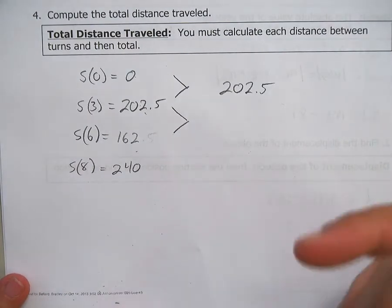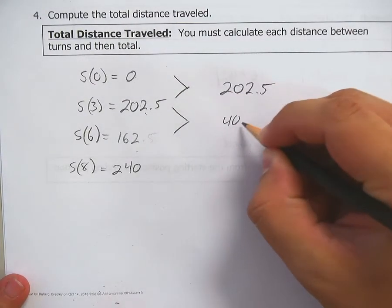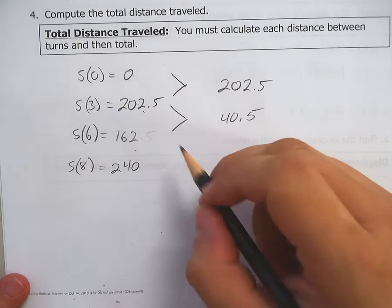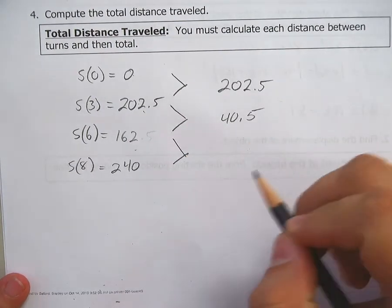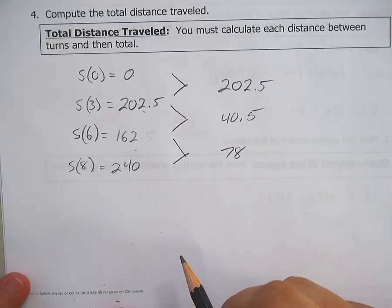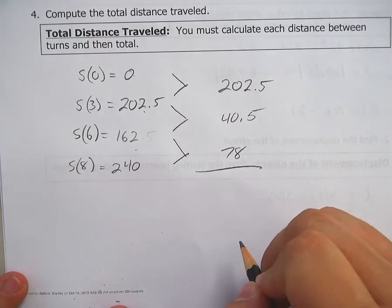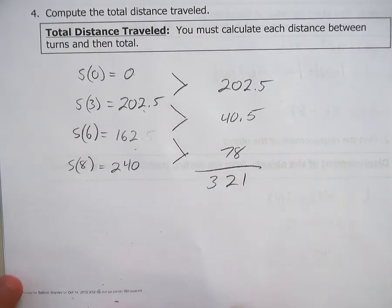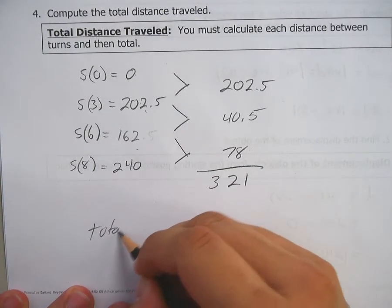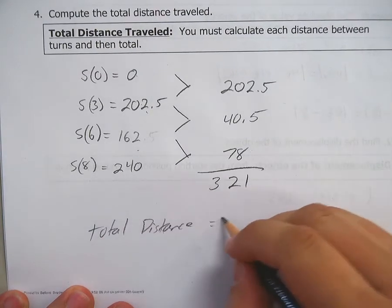The difference between these is 40.5. And then going from 162 to 240 is a distance of 78. Add up your total distances, and you get 321. So your total distance traveled is 321.